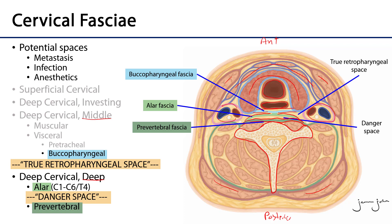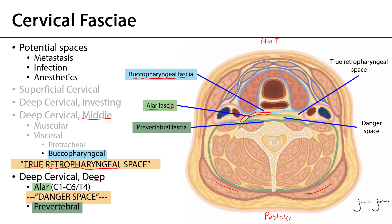Thanks to all of these fascial layers, we have some fascial spaces in here. The first fascial space is going to be between the buccopharyngeal fascia and the alar fascia — we refer to that space as the true retropharyngeal space. It's called the true retropharyngeal space because it is immediately retro, or behind, the pharynx.